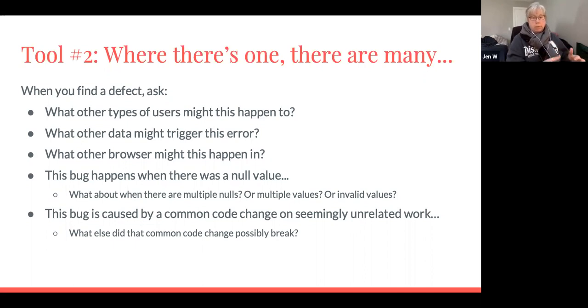And also sometimes to find the source of the defect, which can help the developer team then fix the defect. So when I find a defect, I ask what other types of users might this happen to? You can ask what other data might trigger the error. What other browser might this happen in? If a bug happens when there's a null value, let your mind just wander. Well, what if there's multiple null values? What if there's multiple non-null values? What if there's invalid values?